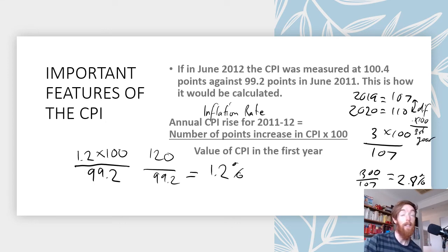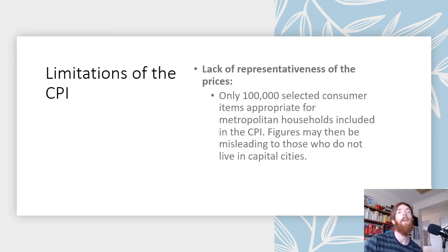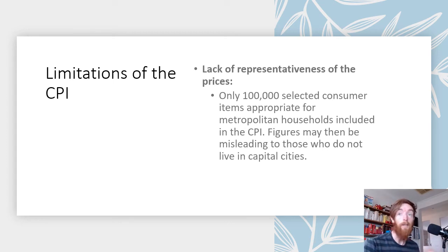If you can apply that formula you'll always be right when asked to calculate inflation. You might also be asked to compare the result to the goal and assess whether it's been achieved, but the core task is the calculation: difference between the two years × 100, divided by the value of the first year. What we've been measuring so far is called the headline inflation rate.